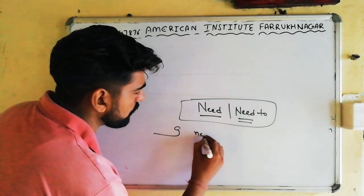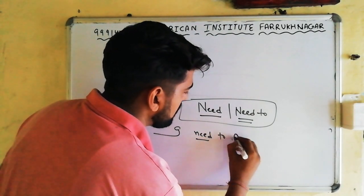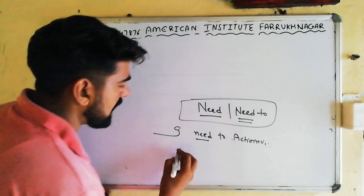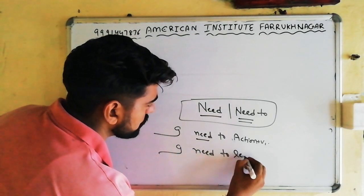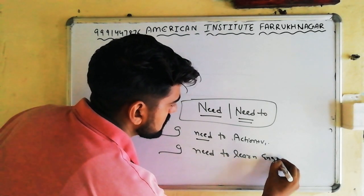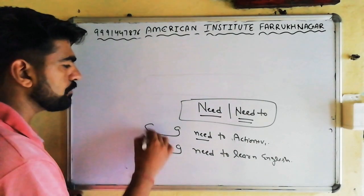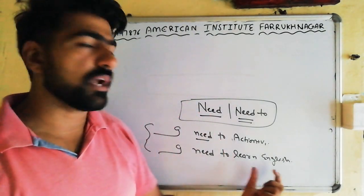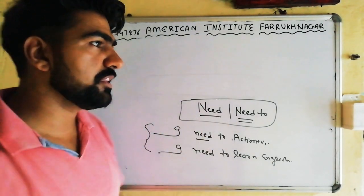When you use NEED as the main verb, you will say: I need to + action. For example: I need to learn English. You use 'need to' when you want to show that something is important or necessary for you — this thing is important for me. But if it is an important thing for you, you must use: I need this.